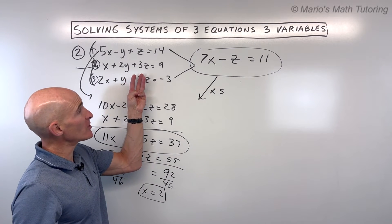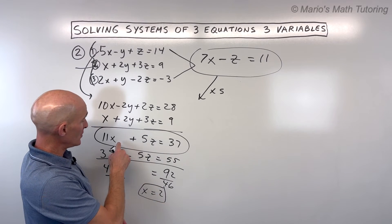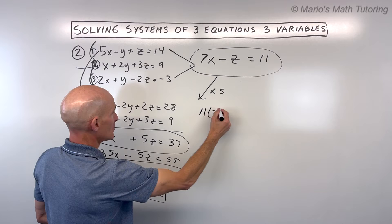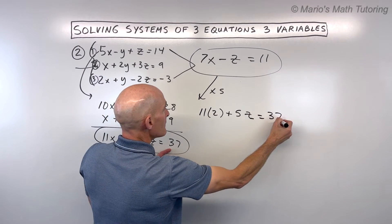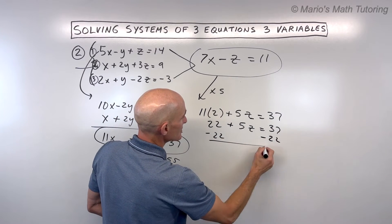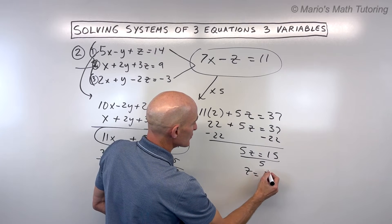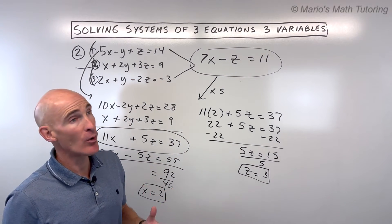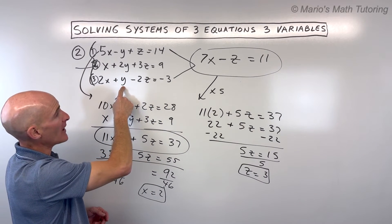We went from three variables and three equations, to two variables and two equations, to one variable and one equation. Now we work our way back. I'll plug x equals 2 into the equation 11x plus 5z equals 37: that's 22 plus 5z equals 37. Subtracting 22 from both sides gives 5z equals 15. Dividing both sides by 5, z equals 3.